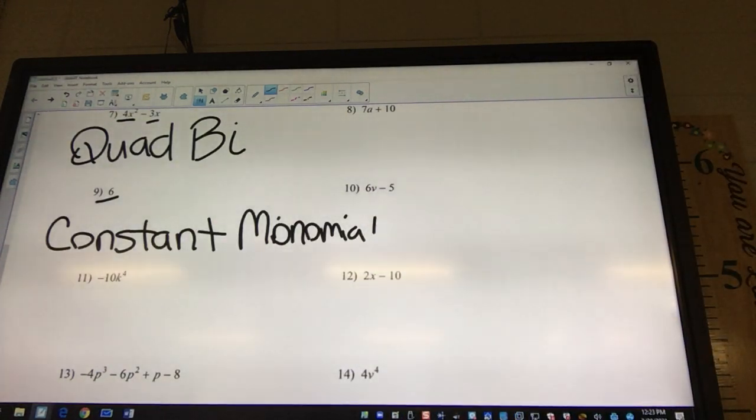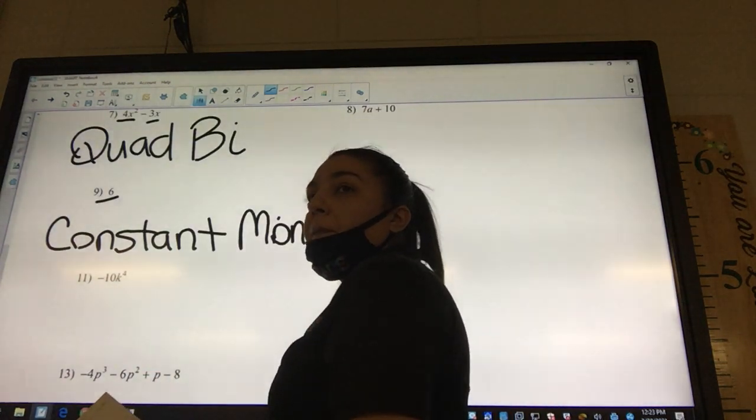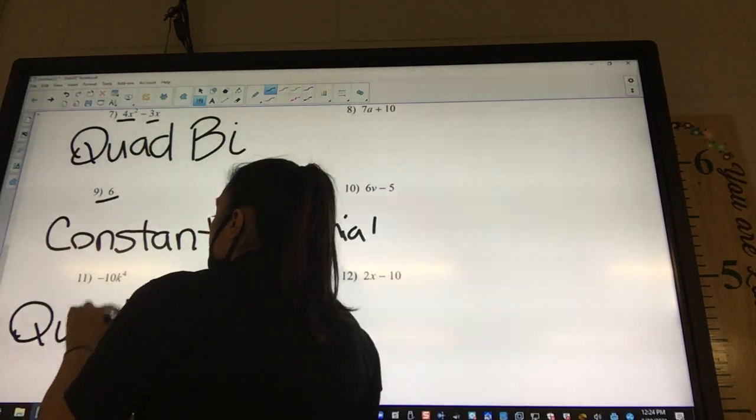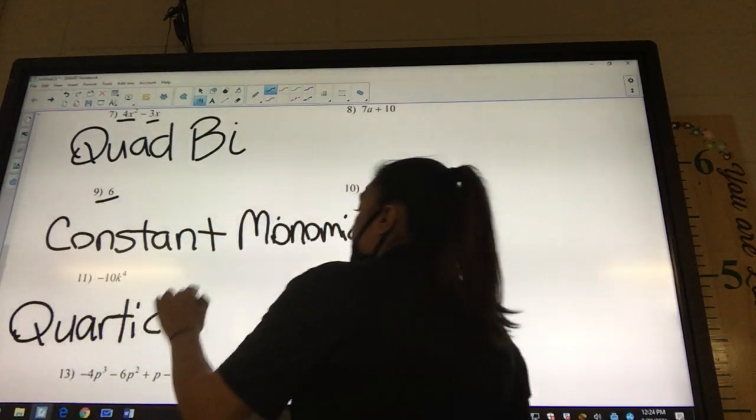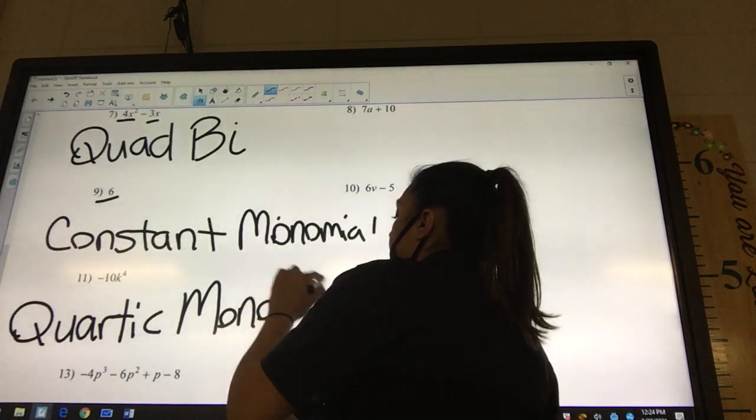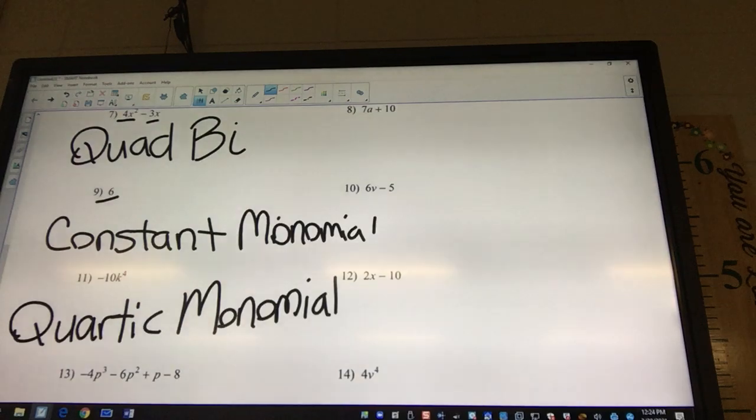Okay, look at 11. What's the highest exponent? Four, so it would be a quartic. Quartic. How many pieces? Monomial. Monomial. Why is Jaden the only one answering me? Because it's easy. I know, because you guys want to work ahead. So, now I'm going to do a half sheet, and you can follow along with me, and then you'll get the other half sheet.